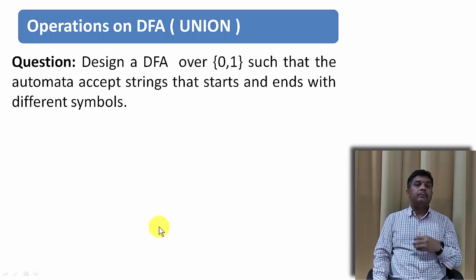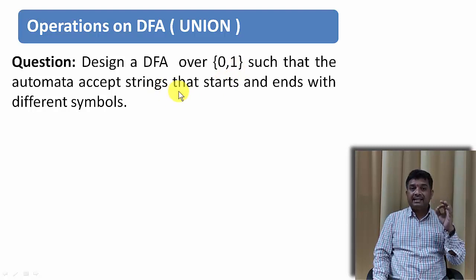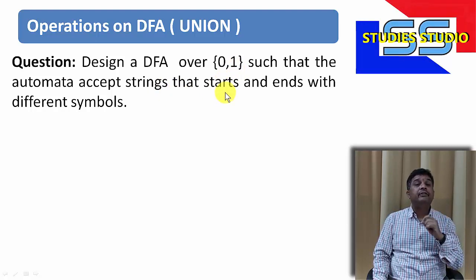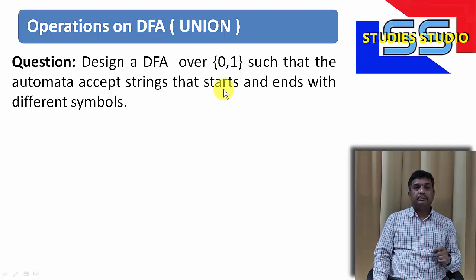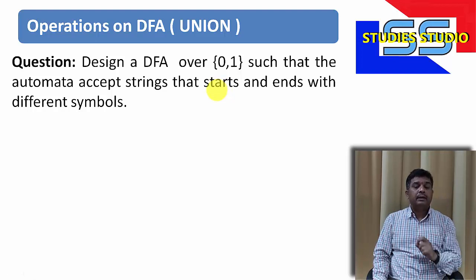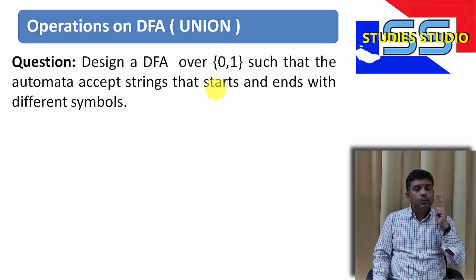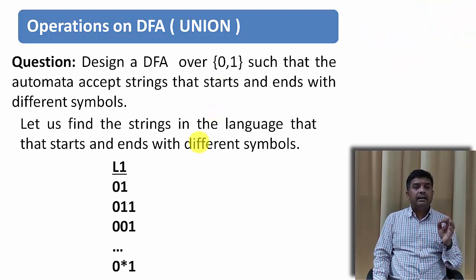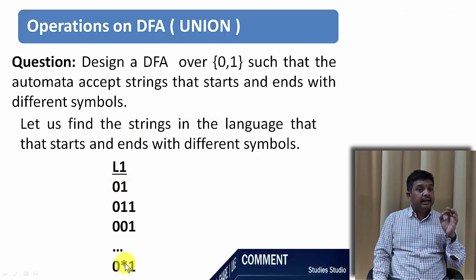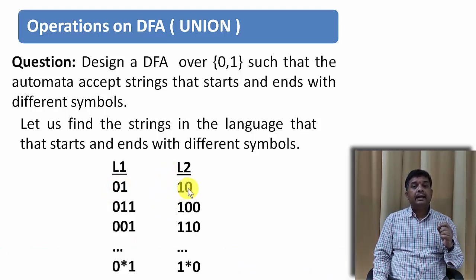Let us try to do a problem based on this. We need to design a DFA over 0 and 1 such that the automata accepts strings that start and end with different symbols. If the string starts with 0 it should end with 1, and if it starts with 1 it should end with 0. So we have two languages: L1 starts with 0 and ends with 1, and L2 starts with 1 and ends with 0, with anything in between.